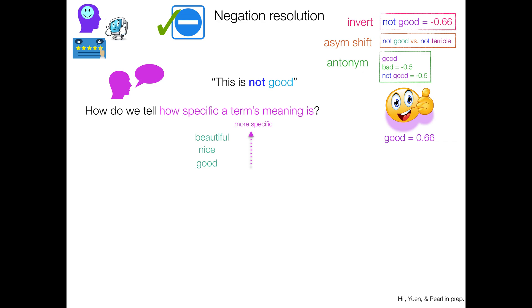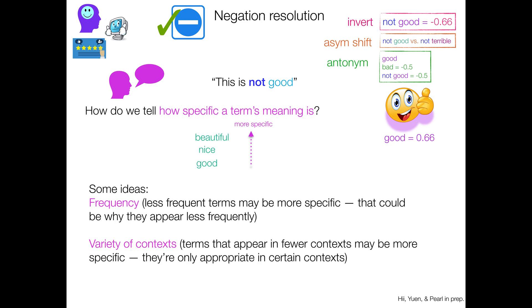So how do we tell then how specific a term's meaning is besides our lovely sort of intuitions as humans? And some ideas are that maybe we should pay attention to the frequency. Maybe less frequent terms are more specific, and that's maybe like why they appear less frequently. Maybe we should also pay attention to the variety of contexts that these words appear in, like terms that appear in fewer contexts may be more specific. They're only appropriate in certain contexts. That makes them more specific.